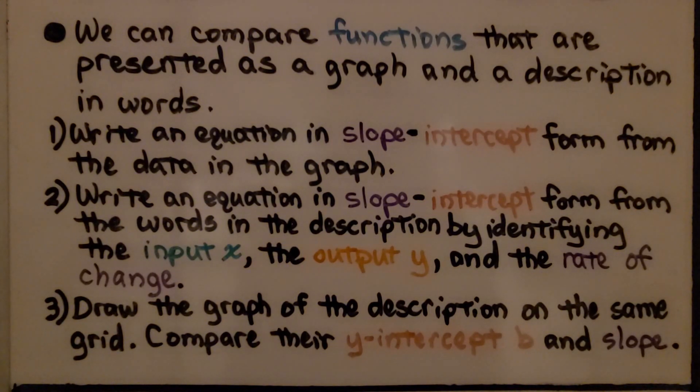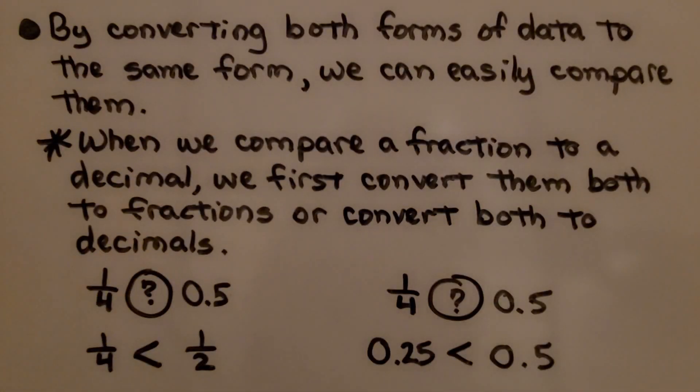We can compare functions that are presented as a graph and a description in words. First, we write an equation in slope-intercept form from the data in the graph. Second, we write an equation in slope-intercept form from the words in the description by identifying the input x, the output y, and the rate of change. Third, we draw a graph of the description on the same grid and compare the y-intercept b and the slope. By converting both forms of data to the same form, we can easily compare them.